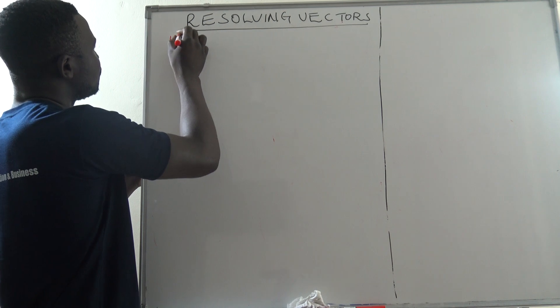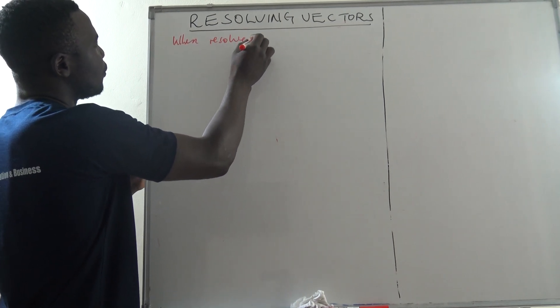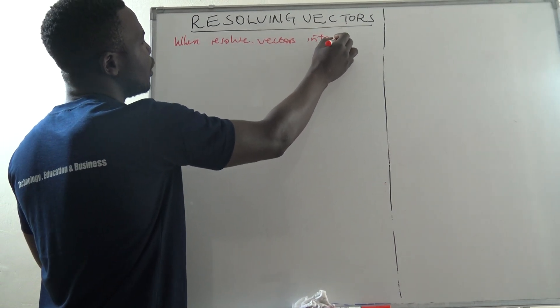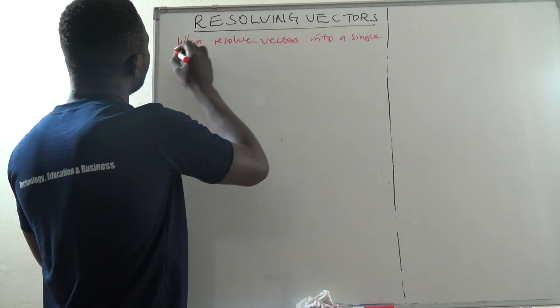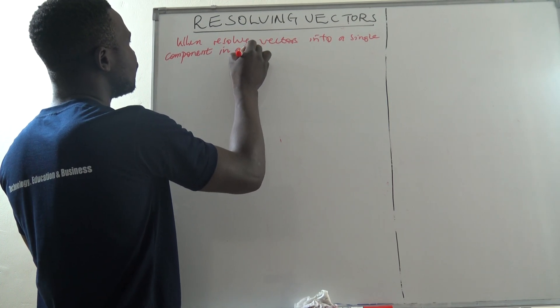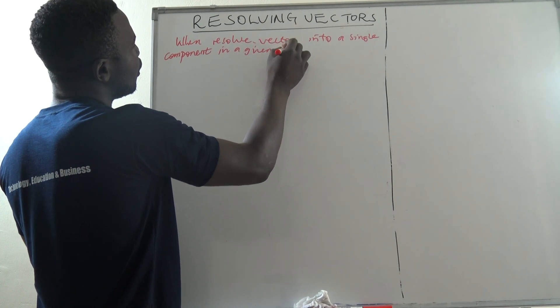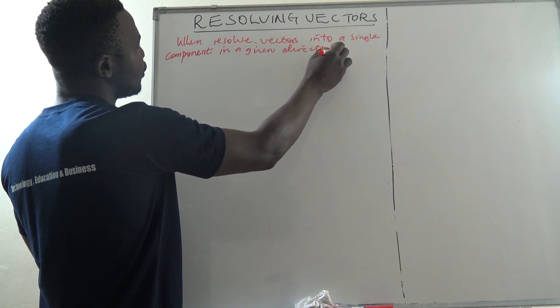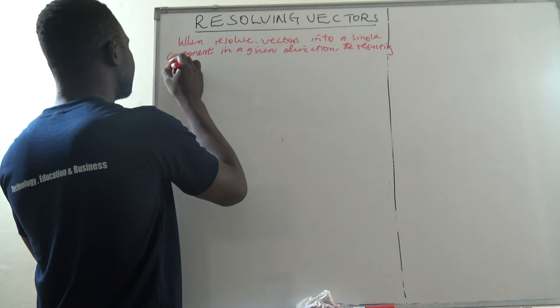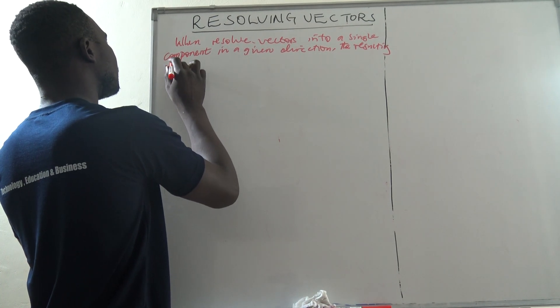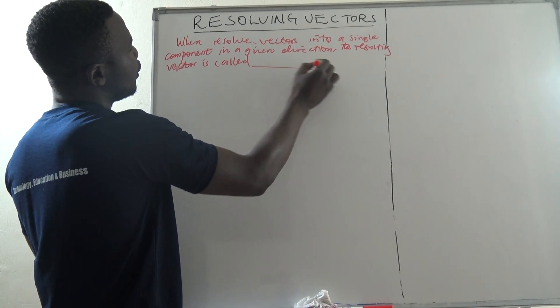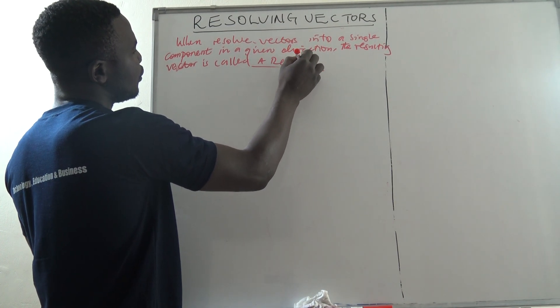When we resolve vectors into a single component in a given direction, the resulting vector is called a resultant vector.